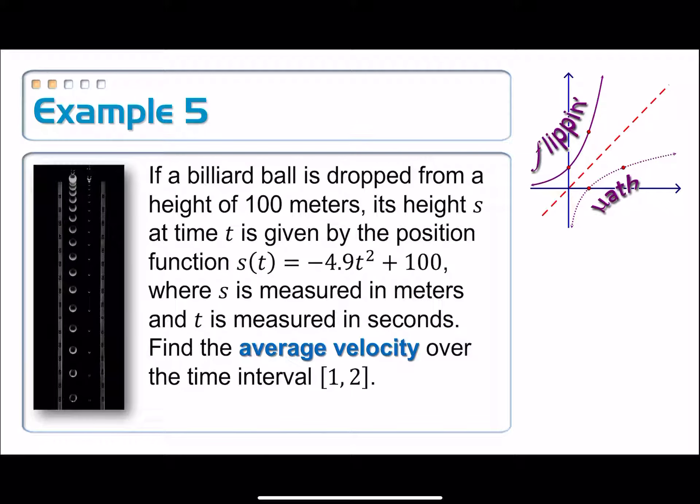On example five, if a billiard ball is dropped from a height of 100 meters, its height s at time t is given by the position function s(t) = -4.9t² + 100, where s is measured in meters and t is measured in seconds. Find the average velocity over the time interval [1, 2].